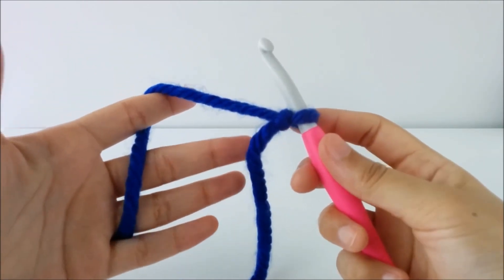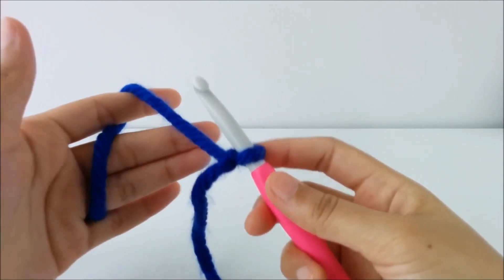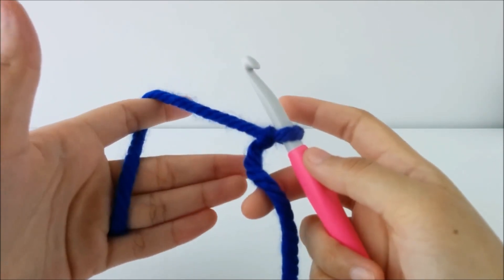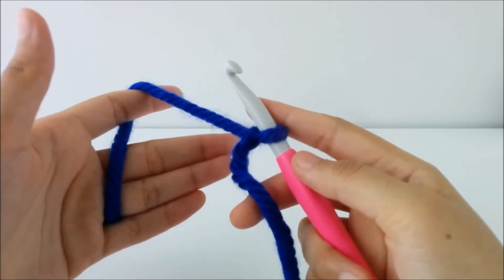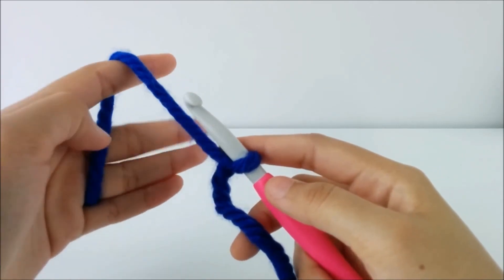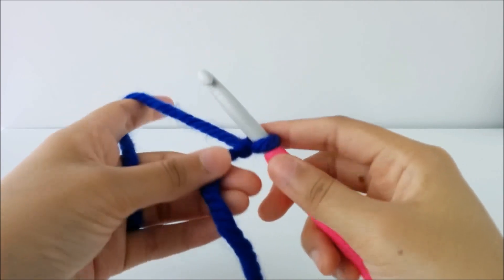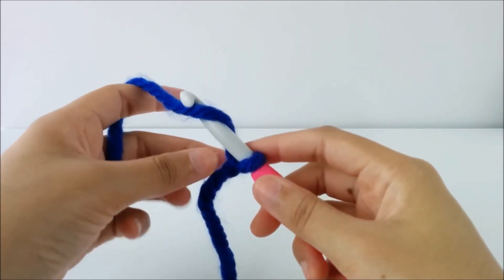And I hold my yarn in a lot of different ways. So do whatever is comfortable for you. But I like to have it tucked somewhere around my pinky so I can hold it and it doesn't get loose. And then over my index finger so that I can control it when I'm yarning over and moving it around. I can use my index finger to do that.